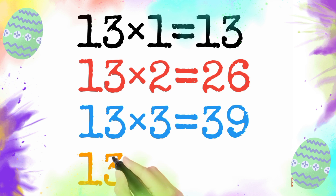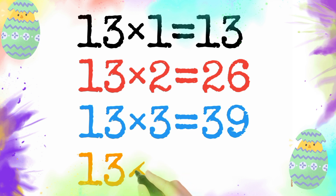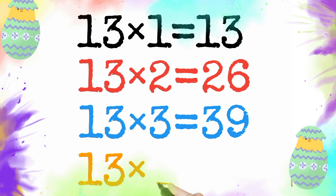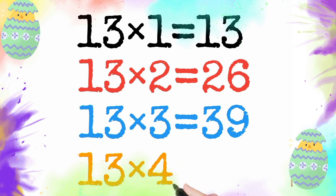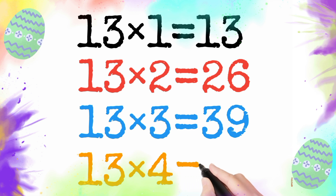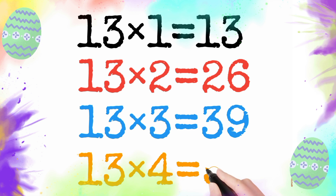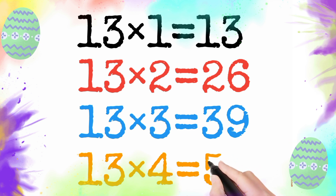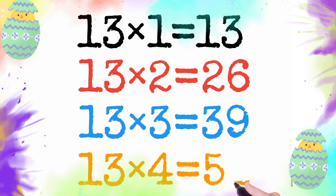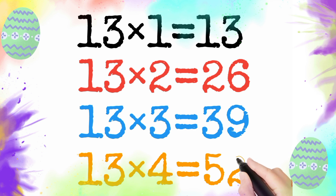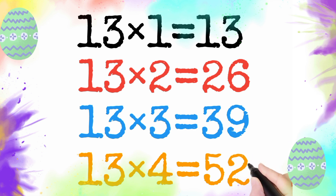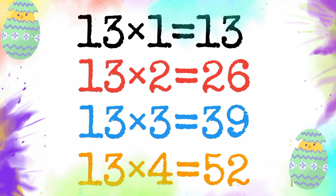13 multiply by 4 is equal to 52. So 13 times 4 is 52.